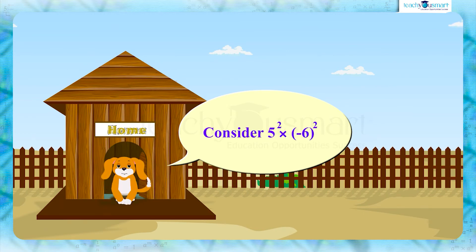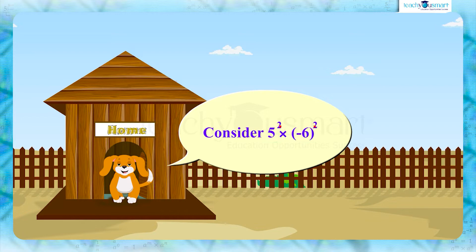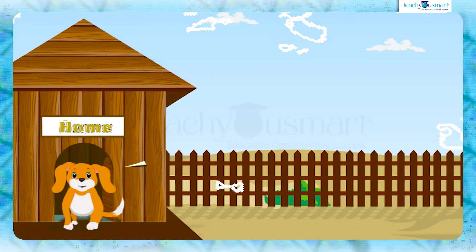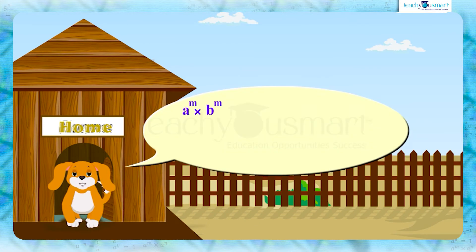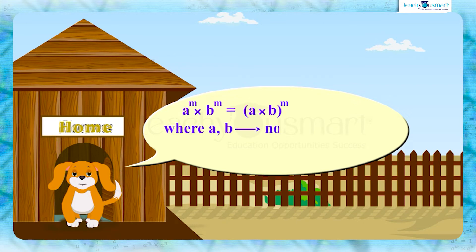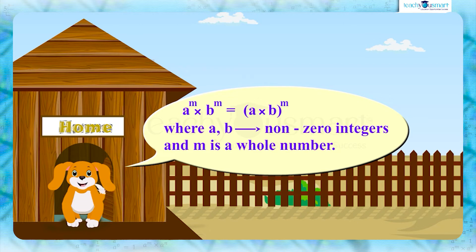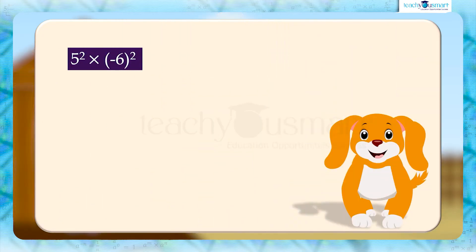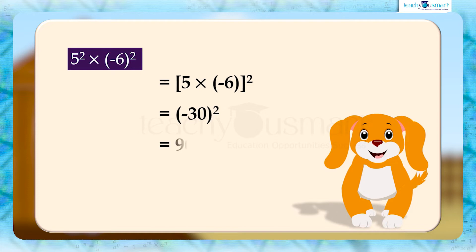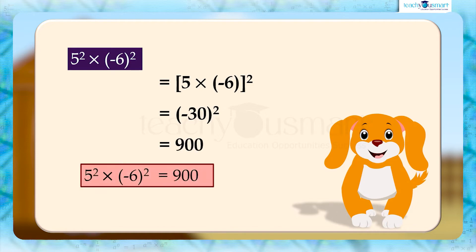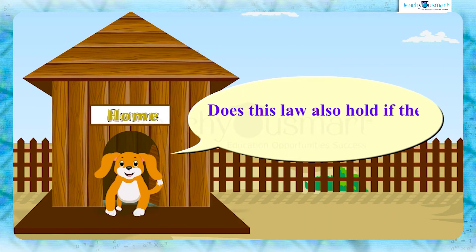Consider 5 raised to 2 multiplied by (-6) the whole raised to 2. Here we can see that the bases are different and the exponent is the same, so we can use the law: a raised to m multiplied by b raised to m equals (a × b) the whole raised to m, where a and b are non-zero integers and m is a whole number. That is, 5² × (-6)² = (5 × (-6))² = (-30)² = 900. Does this law also hold if the exponents are negative?